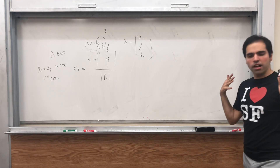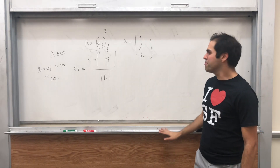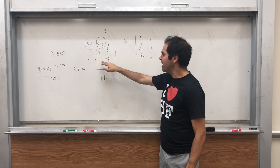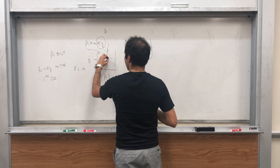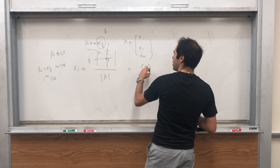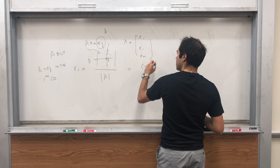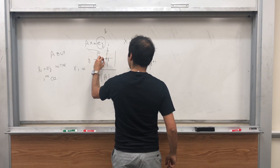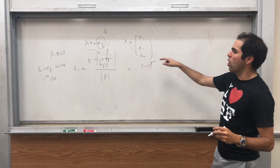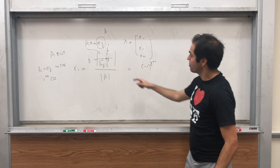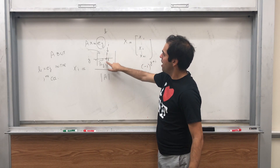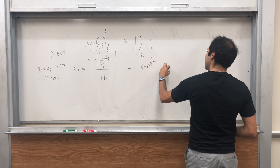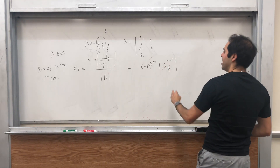Now, you can use a cofactor expansion along the i-th column to find that determinant in the numerator. It becomes (−1)^(J+I) times 1 times the determinant of the remaining submatrix. What is that remaining determinant? It's simply A_JI~ — the minor obtained by eliminating the j-th row and the i-th column of A — because e_j is in the i-th column and has its 1 in the j-th row. So the numerator equals (−1)^(J+I) times det(A_JI~).